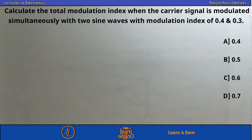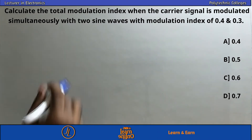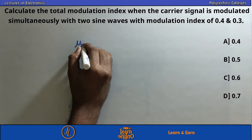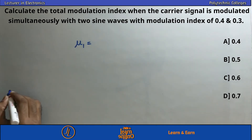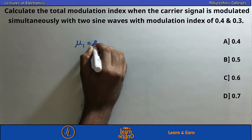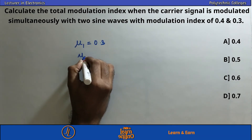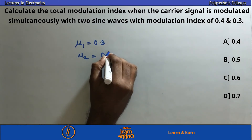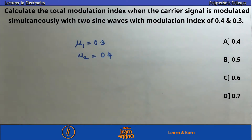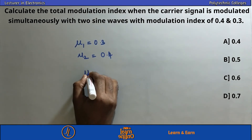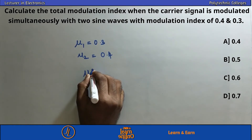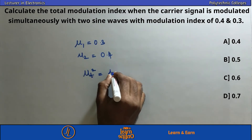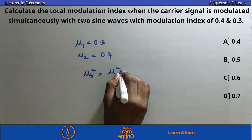Now for a multi-tone modulation problem. We have two modulation indexes: μ₁ = 0.3 and μ₂ = 0.4. For multi-tone modulation, the total modulation index is the square root of the sum of squares of the individual modulation indexes.